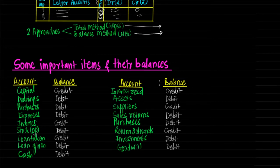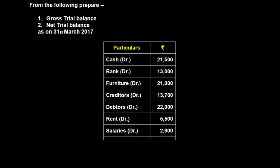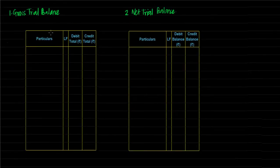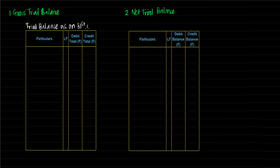As you see more and more examples, you will naturally remember these balances, so there is no need to deliberately memorize these accounts. Now we take an example on trial balance: from the following, prepare a gross trial balance and a net trial balance as on 31st March 2017. We would prepare the gross trial balance first, then the net trial balance. Trial balance is always prepared as on a particular date — in this case 31st March 2017.